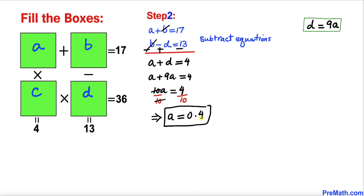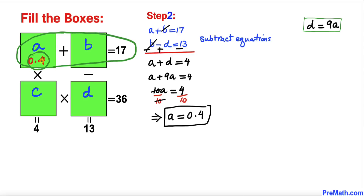Now focusing on the top two boxes, A plus B equals 17, and we know A is 0.4, so our B value has got to be 16.6. Adding 0.4 and 16.6 we indeed get 17.